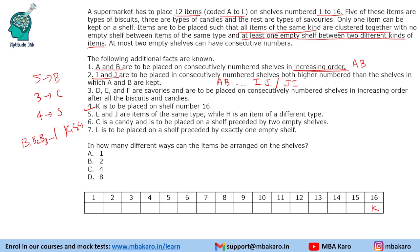D, E and F are savouries and need to be placed on consecutively numbered shelves in increasing order after all the biscuits and candies. So savouries come at the end. Since there are four savouries and D, E, F come on consecutively numbered shelves, the last four positions are savouries. So D, E and F will come together on shelves 13, 14 and 15.